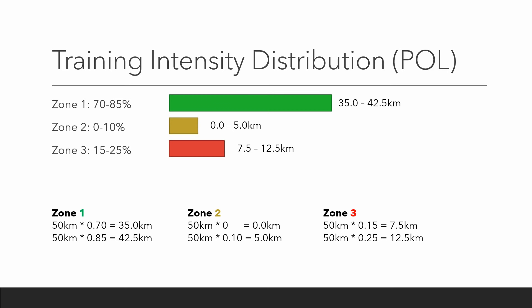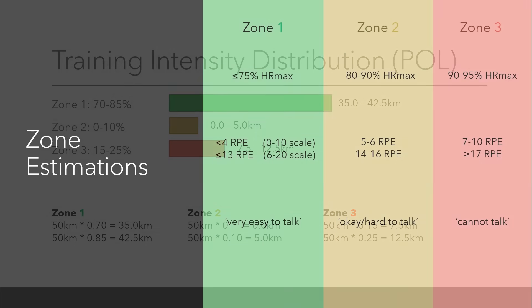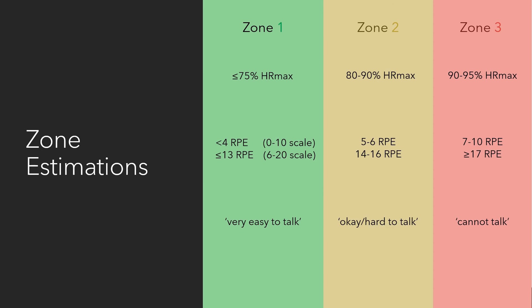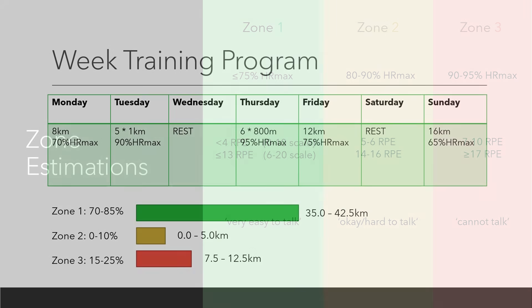If we multiply our weekly training volume by the percentage of training we should be doing in each zone, we can easily calculate how much distance we should be running in each of the three zones. In this example, we'll be running 35 to around 43 kilometres in zone 1, 0 to 5 kilometres in zone 2, and 7.5 to 12.5 kilometres in zone 3. Do be aware that heart rate will increase for the first 3 to 6 minutes of steady state exercise and then level out, so don't be concerned if your heart rate looks rather low when starting a session. If you're doing intervals, take the last 30 seconds to a minute of the interval and use the peak heart rate that you record.